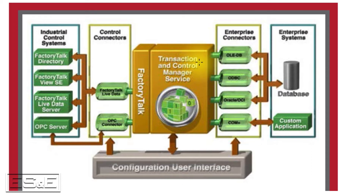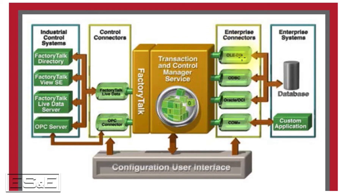One example we see used a lot is recipe management. If you want your recipes to be centrally stored and managed from an enterprise system, those recipes could be stored in a relational database. Via the SCADA or HMI, you would select which recipe you want to run, and that would trigger the database to send those values from the database table down to the controller. That bi-directional capability really comes in handy.